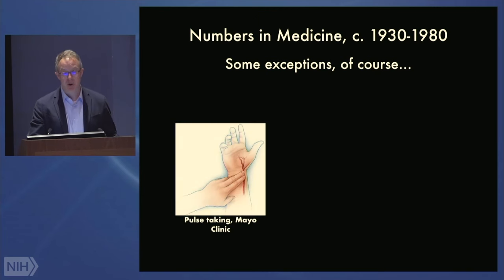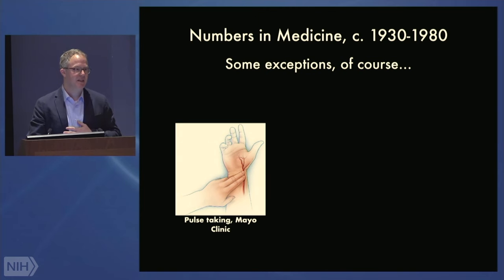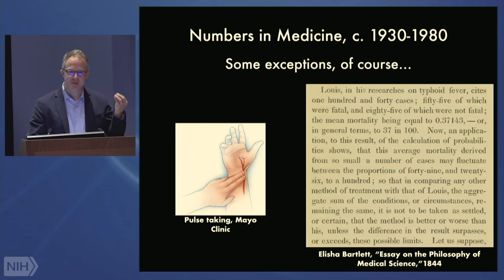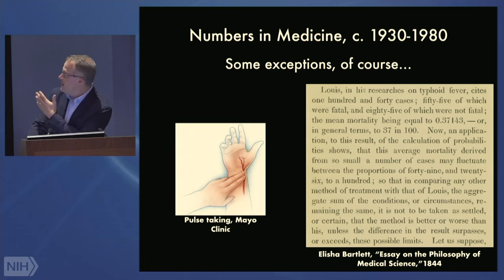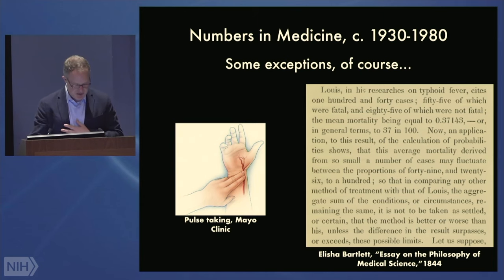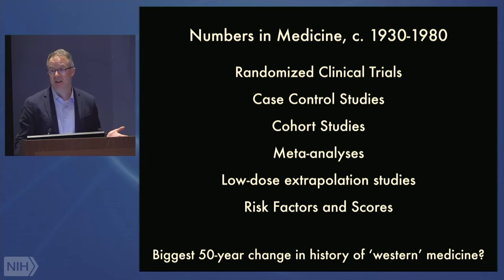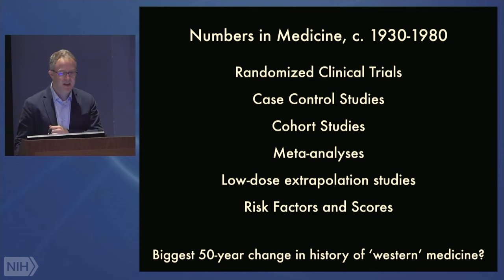One of the most famous exceptions is the use of pulse, which was used globally as a quantification method widely used in medicine. In France and the U.S., there's also a famous counterexample in the 1840s where a small group working at large hospitals quantified cases as a measure of trying to determine whether a therapy was actually effective. By 1980, however, numbers are everywhere. You really cannot practice research in medicine or be a practicing physician without some idea of how to deal with statistics — from randomized clinical trials to risk factors, meta-analyses, and similar.